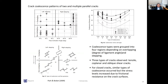This slide shows the coalescence types of two or multiple parallel cracks in prismatic gypsum specimens. The coalescence types were grouped into four different regions depending on overlapping and stepping. Three types of cracks are observed: tensile, coplanar or oblique shear, and secondary cracks. The experiment was carried out for both closed and open cracks. For closed cracks, similar types of crack coalescence occurred, but the stress levels increased due to the frictional resistance acting on the crack surface.